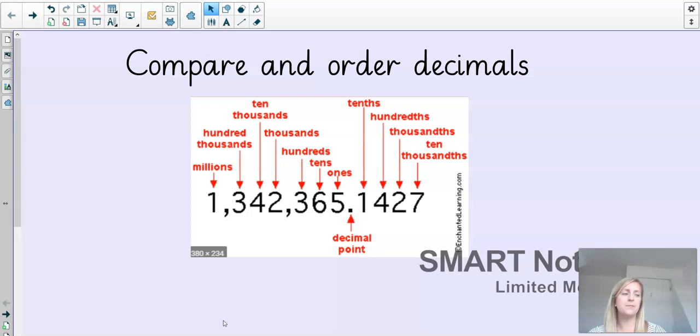So if you look at my screen at the moment, I have got a very large number on the screen, 1,342,365.1427. That is a decimal number, you can see the decimal point there, and then there are digits after the decimal number. And it shows you the place value of each of those digits, which I really like. So this 1 here that I'm circling, the digit is a 1, it represents 1,000,000.